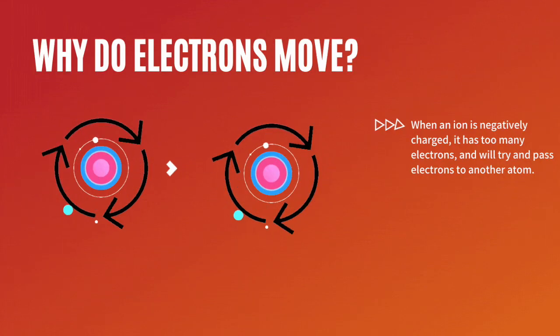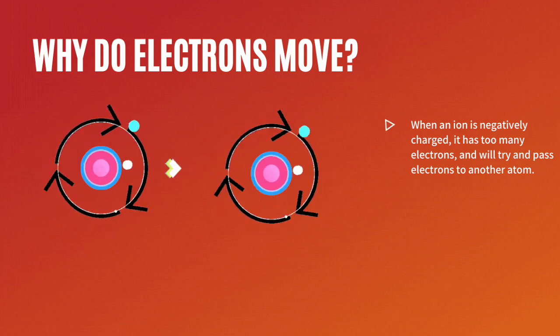When an ion is negatively charged, it has too many electrons, and it will try to pass electrons on to other atoms.